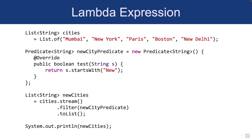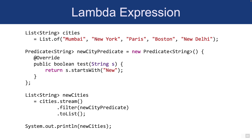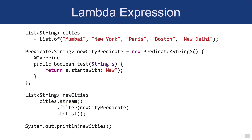Let's look at the basics of lambda expressions first. On the screen we have a list of cities, and we need to create a new list of cities which start with the keyword 'new'. I wrote a Predicate with a test method that returns true if the city starts with 'new', and we use that predicate in the filter method. The result is New York and New Delhi.